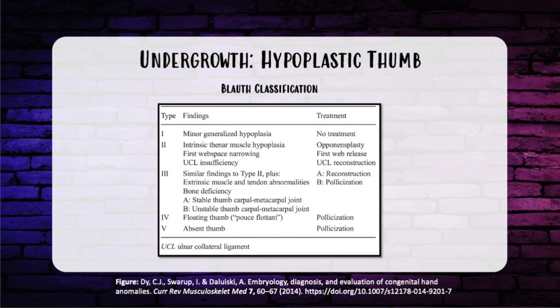That brings us to thumb hypoplasia. The modified Blauth classification is an in-service favorite. Type 1 is a small but normally functioning thumb — no treatment needed. Type 2 has a contracted web space, unstable MCP joint from ulnar collateral ligament deficiency, and underdeveloped or absent intrinsic muscles. Treatment is usually opponensplasty — a tendon transfer to give the thumb opposition, typically using the ring finger FDS tendon — plus web space deepening with Z-plasty, with or without UCL reconstruction.